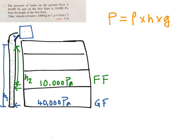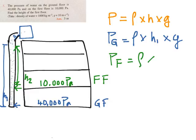So for the ground floor, what is this pressure? For the ground floor, P_G is equal to rho of water into h1 into g. And for the first floor it is P_F equals rho into h2 into g.